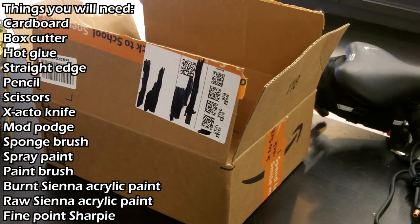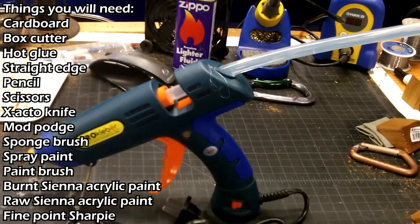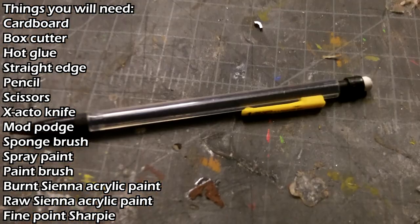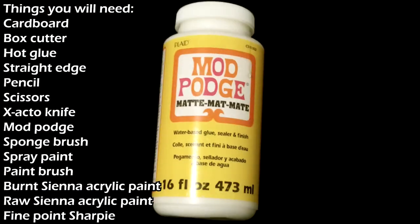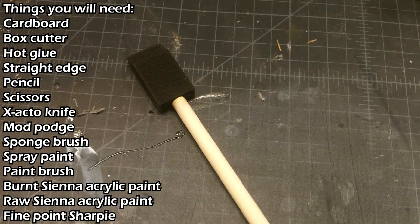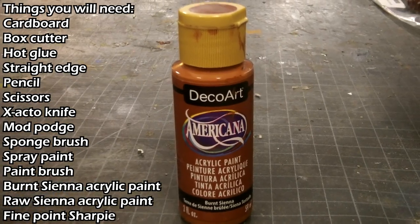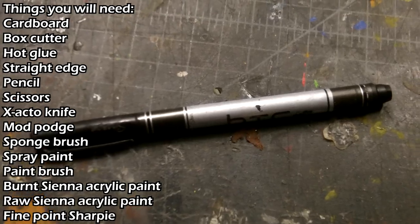Today we'll be making the flying guillotine from TF2. There are things you will need: cardboard, box cutter, hot glue, straight edge, pencil, scissors, X-Acto knife, Mod Podge, sponge brush, spray paint, paintbrush, burnt sienna acrylic paint, raw sienna acrylic paint, and a fine point sharpie.